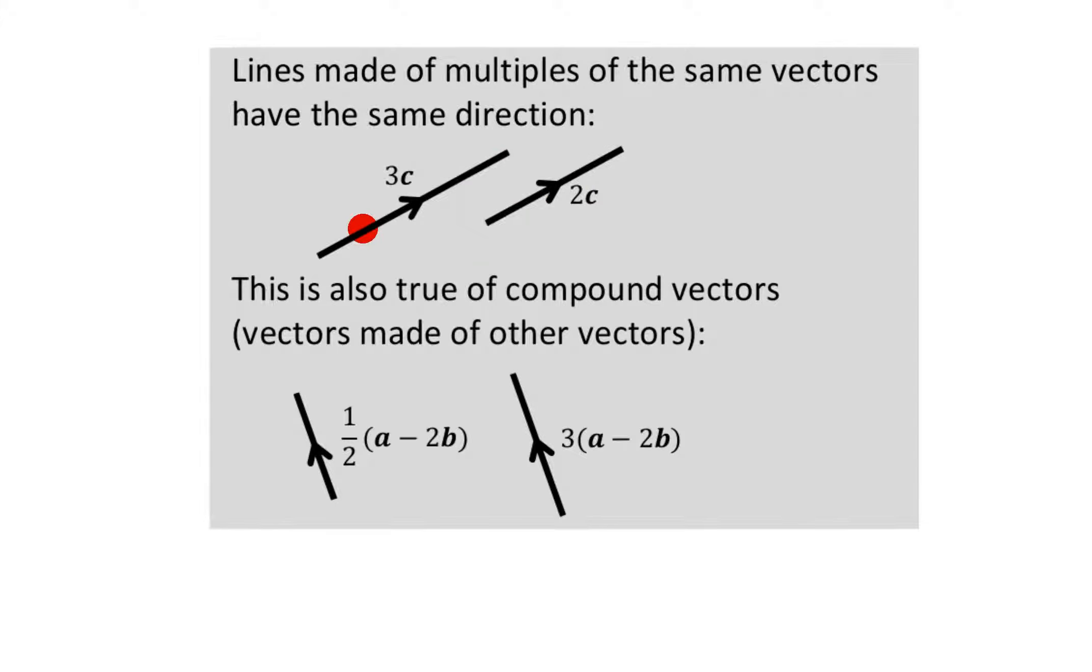And it doesn't matter if you even use compound vectors. Compound vectors are just vectors made of other vectors. Because compound vectors, at the end of the day, a-2b, it just makes another vector, right, so you've got a-2b is just another vector.